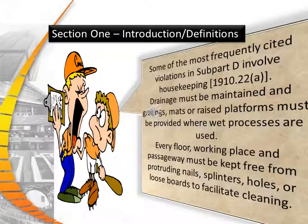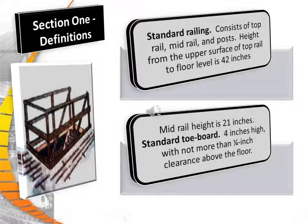Drainage must be maintained and gratings, mats, and raised platforms must be provided where wet processes are used. Every floor, working place, and passageway must be kept free of nails, splinters, holes, and loose boards. OSHA defines the standard railing as consisting of a top rail, mid rail, and post. The height from the upper surface of the top rail to the floor level is 42 inches. The mid rail height is 21 inches, and a standard toe board is defined as 4 inches high with not more than a quarter inch clearance above the floor.